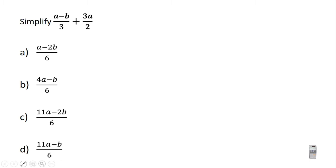The variables are a and b, so you assume values for a and b. In assuming the values, don't pick zero, don't pick negative numbers, and don't pick one. You can pick any positive whole number except one. So don't pick zero, don't pick negative numbers, and don't pick one.